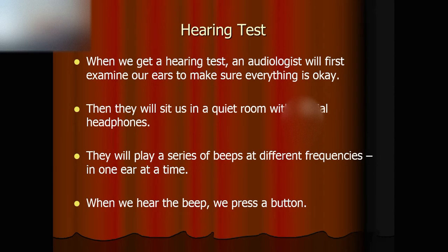In a nutshell, when we get hearing tests, an audiologist will first examine our ears to make sure everything is okay. Then they will sit us in a quiet room with special headphones covering our two ears. Then we will hear a series of beeps at different frequencies in one ear at a time. When we hear a beep, we press a button. If you don't hear anything, we are idle, doing nothing. The testing procedure is pretty simple, but the results are very meaningful to us.